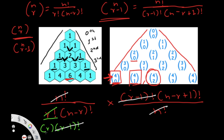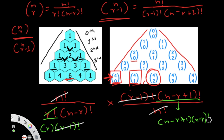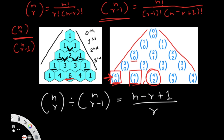Continuing the simplification, we expand (n−r+1)! as (n−r+1) × (n−r)!, and the (n−r)! terms cancel. So we're left with: nCr / nC(r−1) = (n−r+1) / r. Writing that more cleanly, after the proof we end up with nCr / nC(r−1) = (n − r + 1) / r.